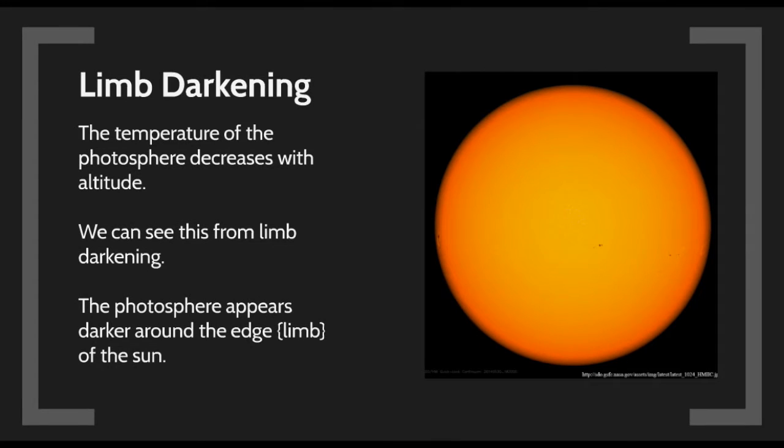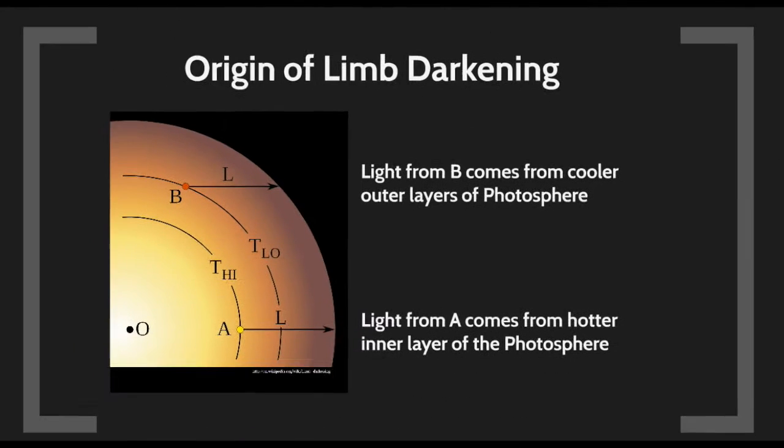Another thing you'll observe on the Sun is limb darkening. The outer edges of the Sun appear darker than the center. This is caused by where the light is being produced. The photosphere changes temperature as you go up from the depths to the surface. At the center, you're seeing light from lower, hotter depths, so that light is brighter. At the edges, light is produced at a cooler part of the photosphere, so it is darker.